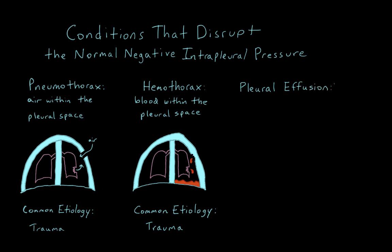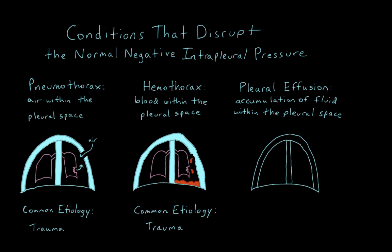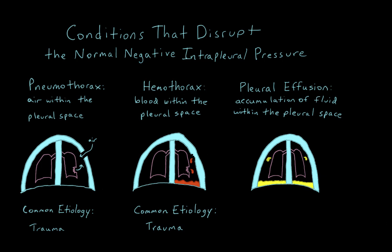A pleural effusion is defined as an accumulation of fluid within the pleural space. Some people will consider a hemothorax as a kind of pleural effusion where the type of fluid is blood. In practice, most clinicians use the term pleural effusion to describe a buildup of the normal pleural fluid that lubricates the pleural space. There are many causes of pleural effusion, both transudative and exudative, but on a surgery clerkship and especially on a cardiothoracic surgery rotation, a common scenario you will see is a pleural effusion caused by parenchymal inflammation following cardiac surgery.